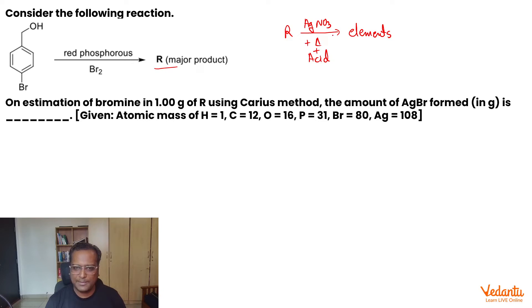So what happens to the Br present in our compound? If Br is present in your compound, these react with the Ag plus present and it gives you AgBr ka precipitate. That simple. So you can simply say, whatever bromine is present in R, all the bromine comes out as precipitate of AgBr.